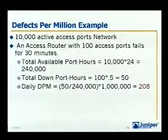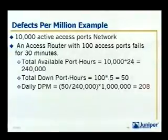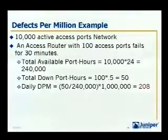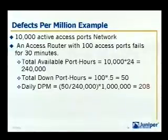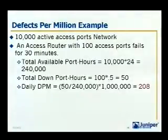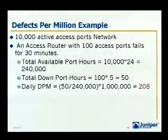Here's an example of measuring availability using DPM. You have 10,000 active access ports, and an access router with 100 access ports fails for 30 minutes. The total port-hours that should have been available is 240,000 hours. Since you have the outage, the port-hours that were down was 50. You can find DPM by dividing 50 by 240,000 then multiplying by one million, giving you 208 DPM. To equate that to availability: since DPM equals unavailability times one million, this translates to 99.98% availability.